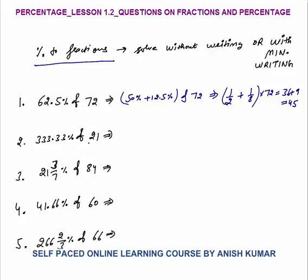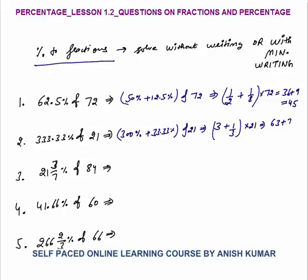Second is 333.33% of 21. Can I say this equals 300% plus 33.33% of 21? What is 300%? 300% means 3. Any time you want to convert percentage to fraction, divide by 100. 300% means 300/100 = 3. 33.33% means 1/3. You must know both fraction to percentage and vice versa. So 21 into 3, plus 7 gives the answer 70.